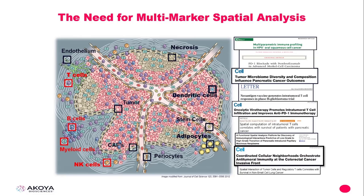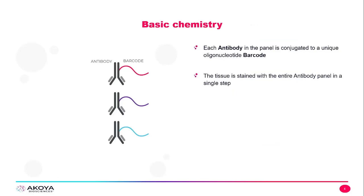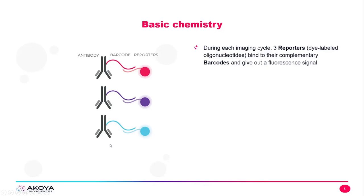Let's see how the CODEX technology works. CODEX is enabled by its basic chemistry, where each antibody in the panel is conjugated to a unique oligonucleotide barcode. The tissue is stained with the entire antibody panel in a single step. During each imaging cycle, three reporters — these dye-labeled oligos — bind to their complementary barcodes and give out a fluorescent signal.